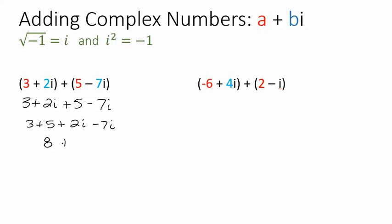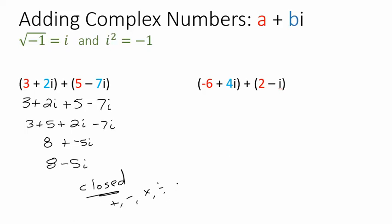So I could write 8 plus negative 5i to show that the a value is 8 and the b value is negative 5. Or more concisely, 8 minus 5i. Notice this complex number plus this complex number gives me another complex number — we call that closed. The complex numbers are closed under addition, subtraction, multiplication, and division, meaning if you add two complex numbers, you get another complex number.